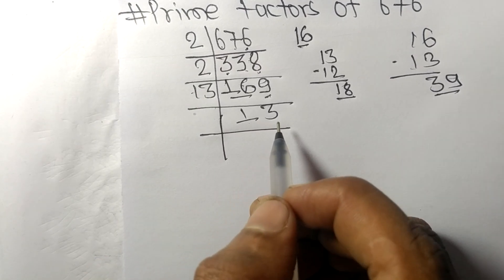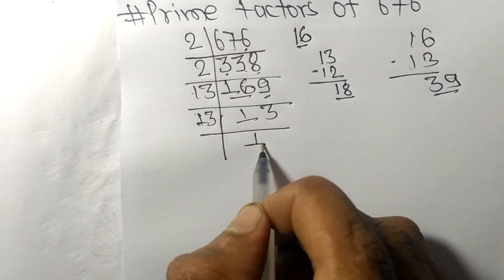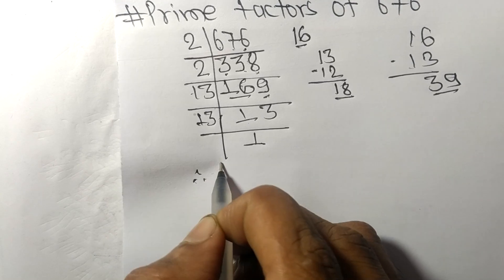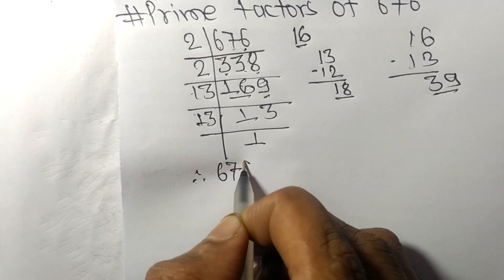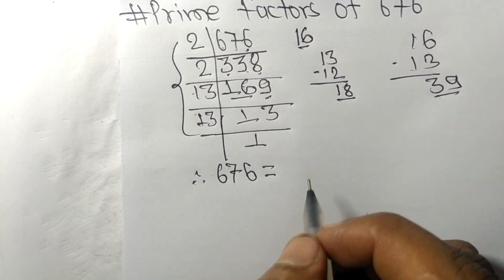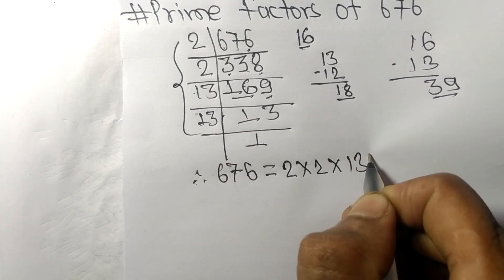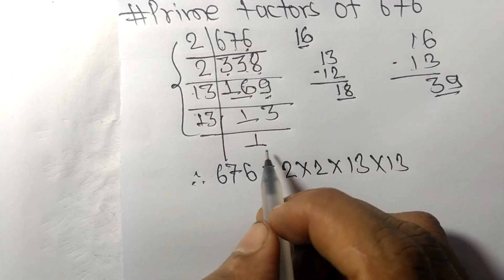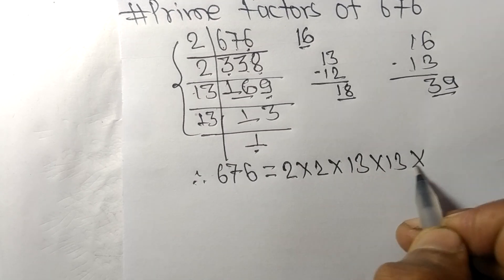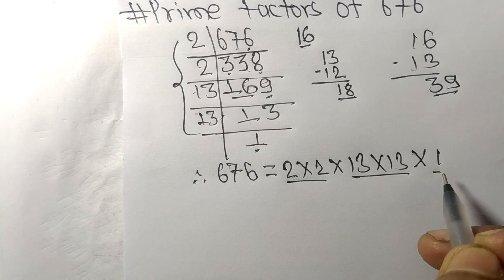So it is divisible by 13 itself and we get 1. Therefore 676 equals 2 times 2 times 13 times 13. So 2, 13, and 1.